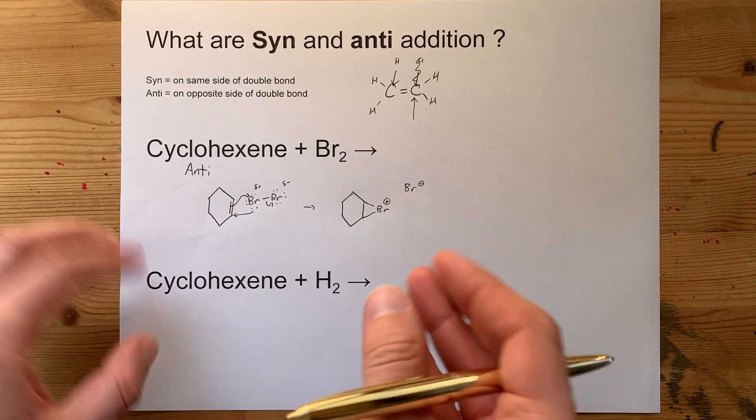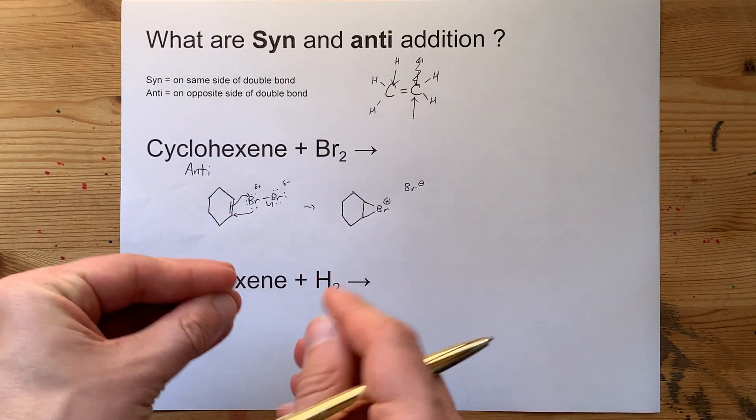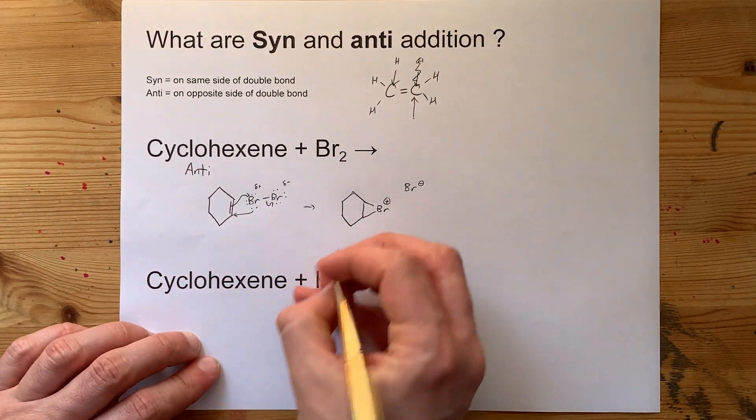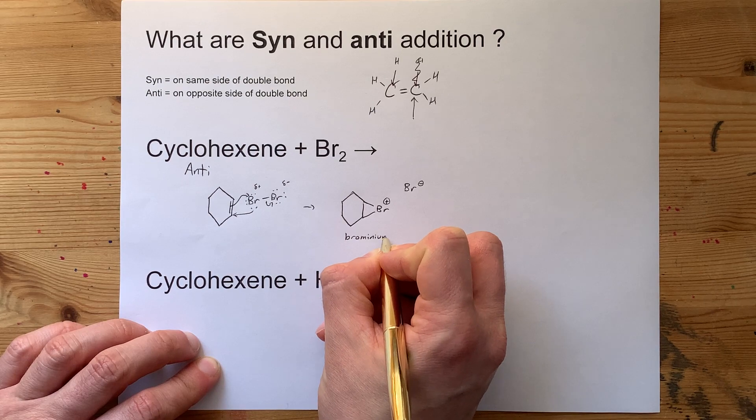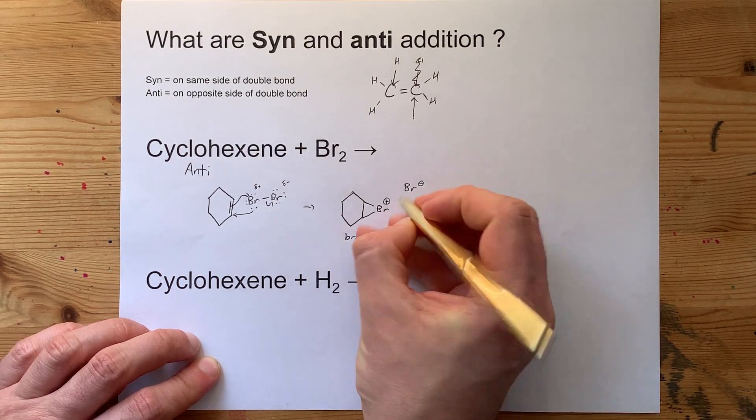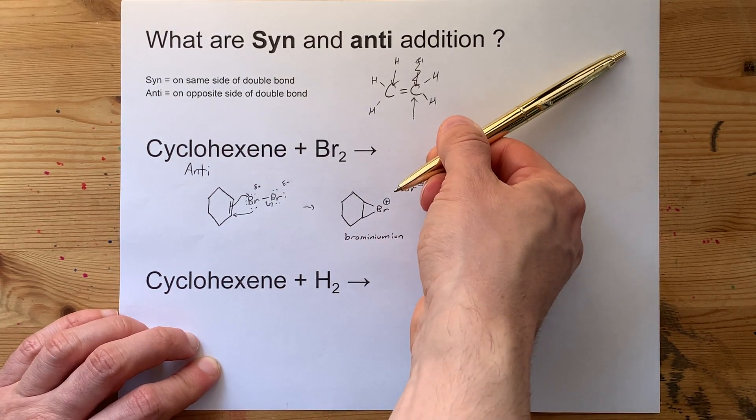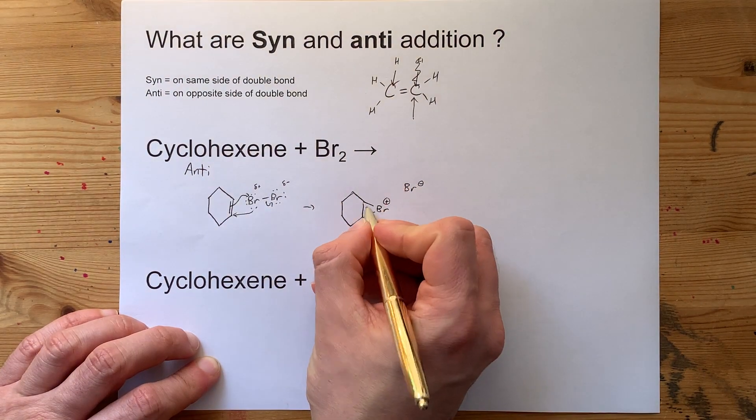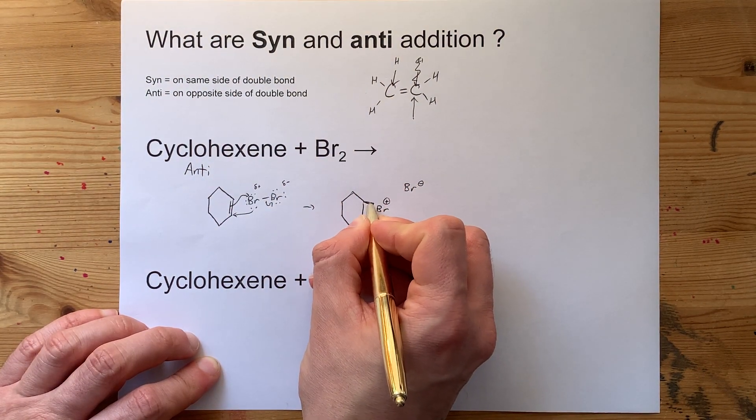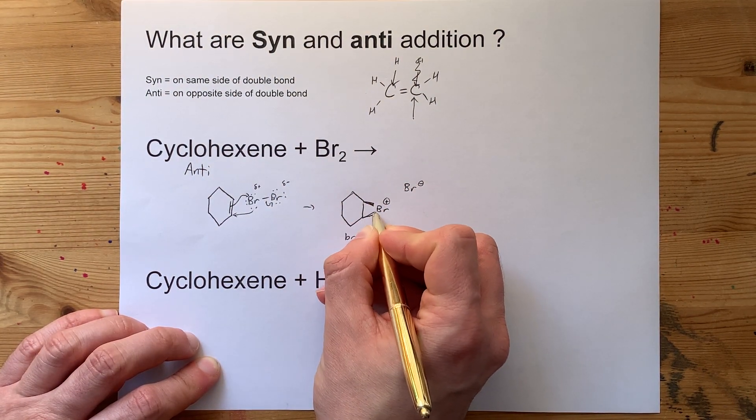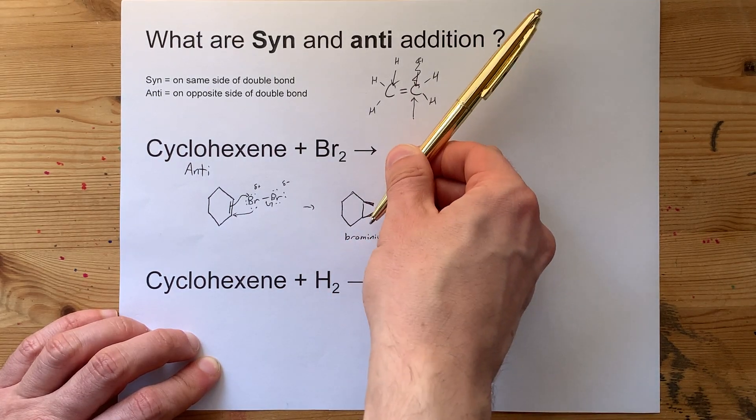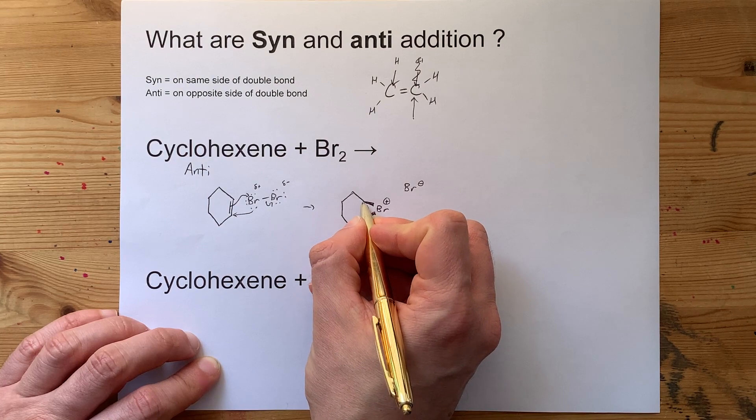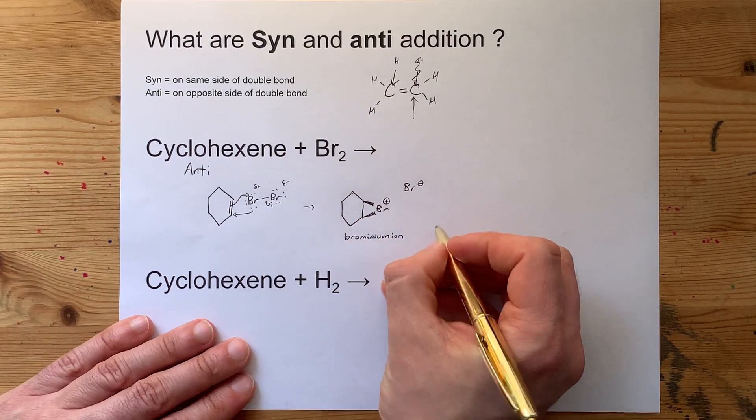Now, because of the way that the bonding and anti-bonding molecular orbitals are arranged in this, which by the way is called the brominium ion if you want to look it up, that Br- can only attack from the back. Perhaps this Br is actually coming out of the page at us. That Br- has to come from behind to attack either this carbon or that carbon.